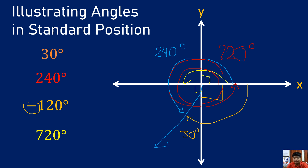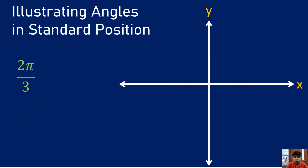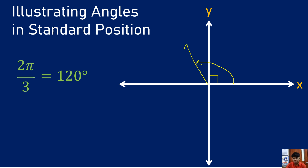So that is how we illustrate angles in standard position. How do we illustrate 2π/3, which is in radian measure? We need to convert that to degree measure — it equals 120 degrees. That is a positive angle, so the rotation must be counterclockwise. This is 90 degrees, so we just need 30 more degrees. We approximate here — that is the terminal side. That is how we illustrate a 120 degree angle, which is 2π/3.